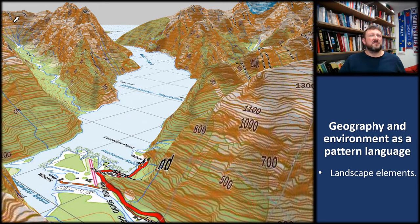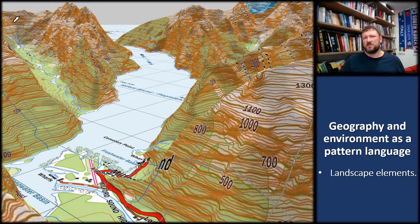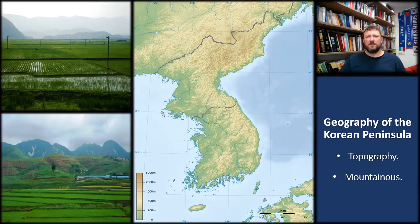We can start by identifying specific landscape elements as the starting point. These elements include topography, watersheds, soils and underlying rock strata, as well as the prevailing climate and weather patterns and flora and fauna. Let's bring this framework now to the Korean Peninsula.